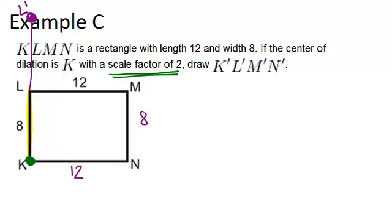So KN originally was 12, which means now that we're doing our dilation, the scale factor is 2, so we're doubling that. And this would be N prime. So its full length is 24, we want 12 more.